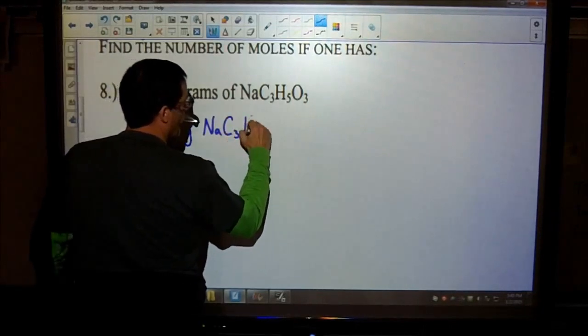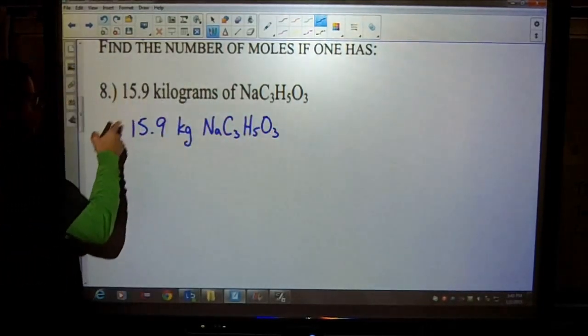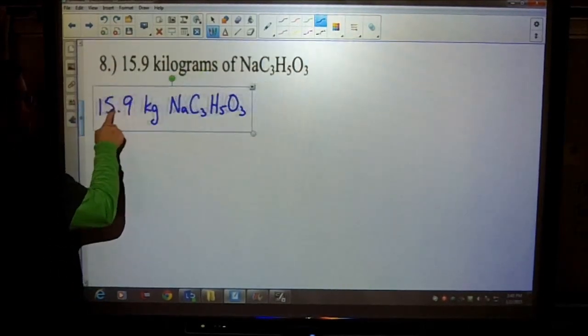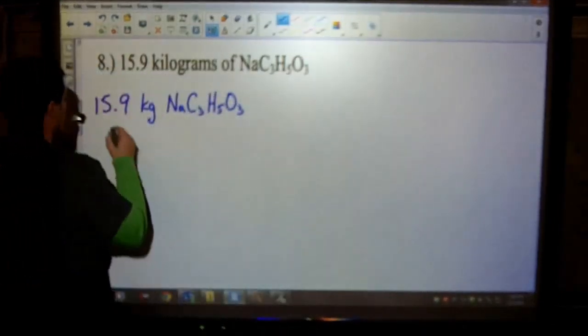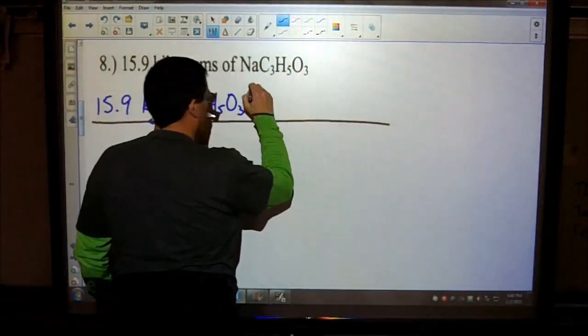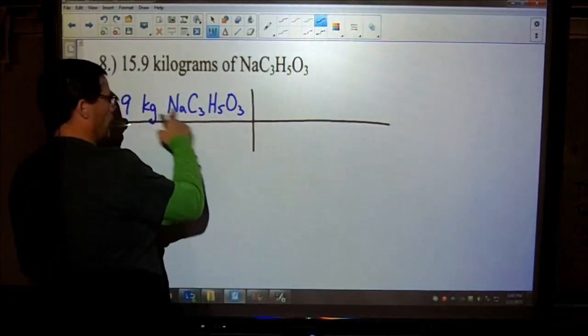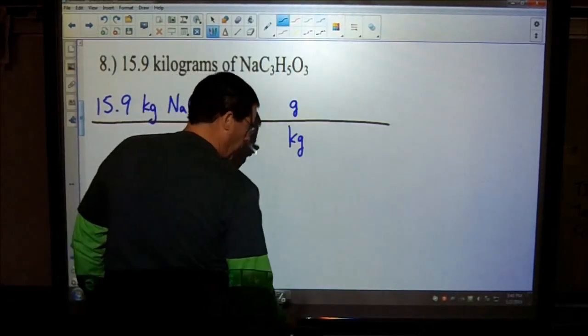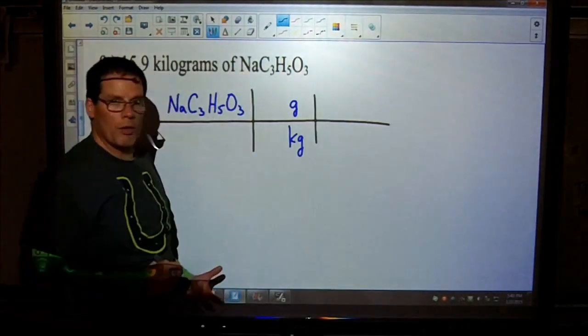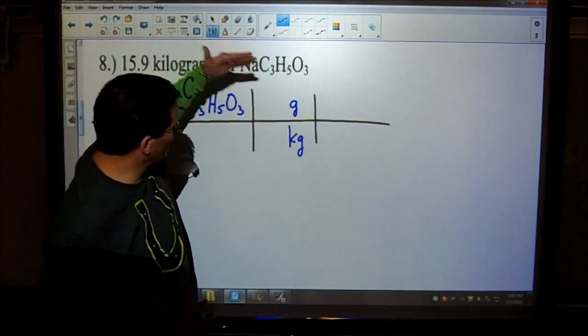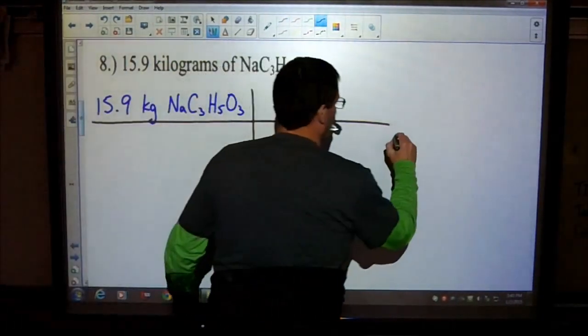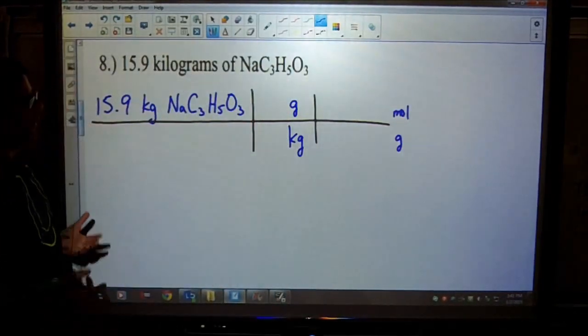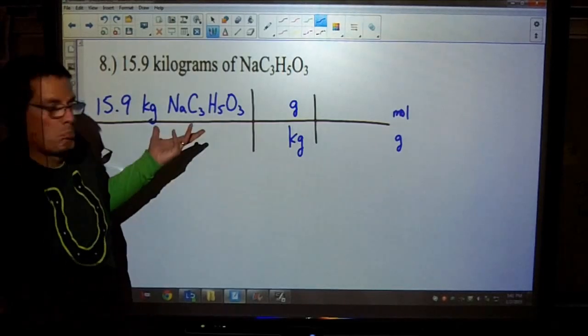So the first thing that we need to do is, we need to change kilograms into grams. So I'm going to scoot that over. And don't forget your conversions. If it's not the unit you're looking for, move it diagonally. We're going from kilograms to grams. And just like in factor labeling, if you need to do this, go ahead and show the units first.